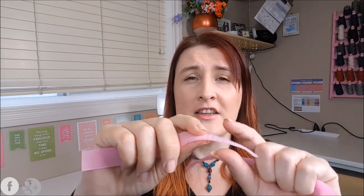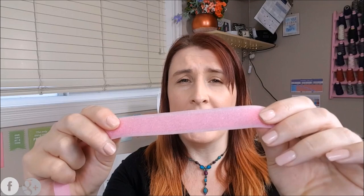So velcro has two parts. It'll have a side that's got these really coarse hooks on it and the second side is a little bit softer and fluffier. And when you stick them both together, they attach really firmly and you can rip them apart.